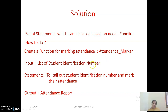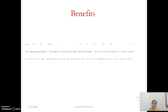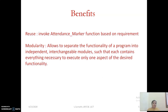We've got the solution. If I send the list of student identification numbers participating in a particular sports event, I get the attendance report for that event. If I send the student register numbers registered for a seminar, I get the attendance report for that. The benefit is reusability — you can invoke this function 'attendance_marker' based on your requirement. Wherever you need it, you just call the function by giving the input and you get your output.